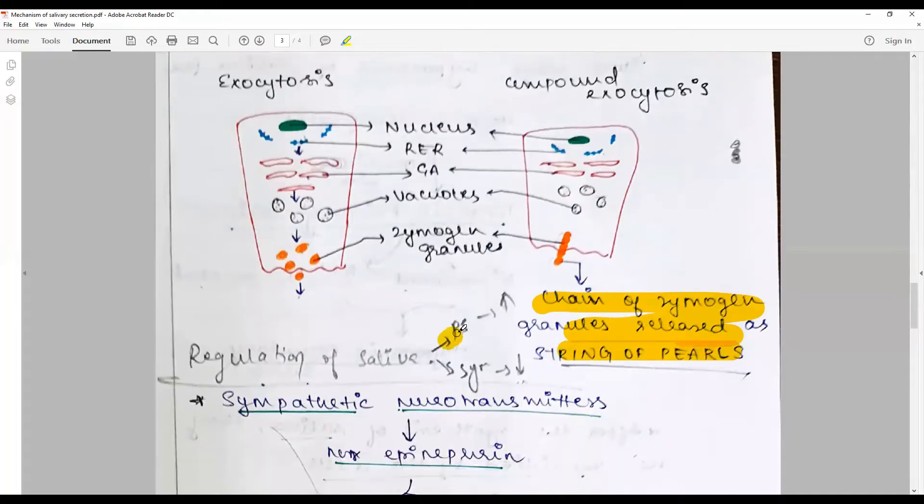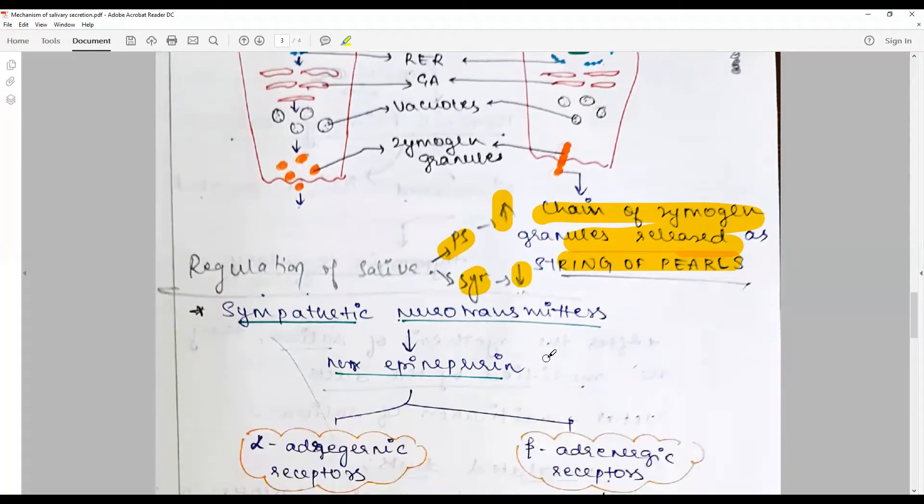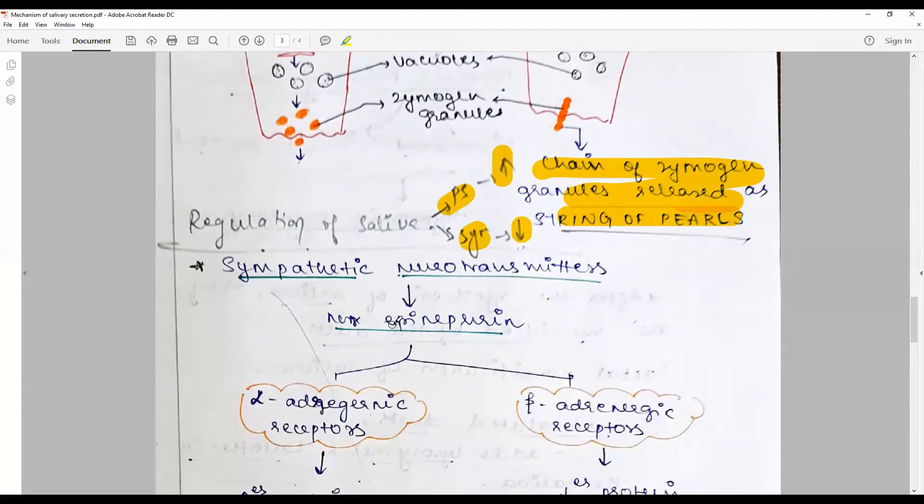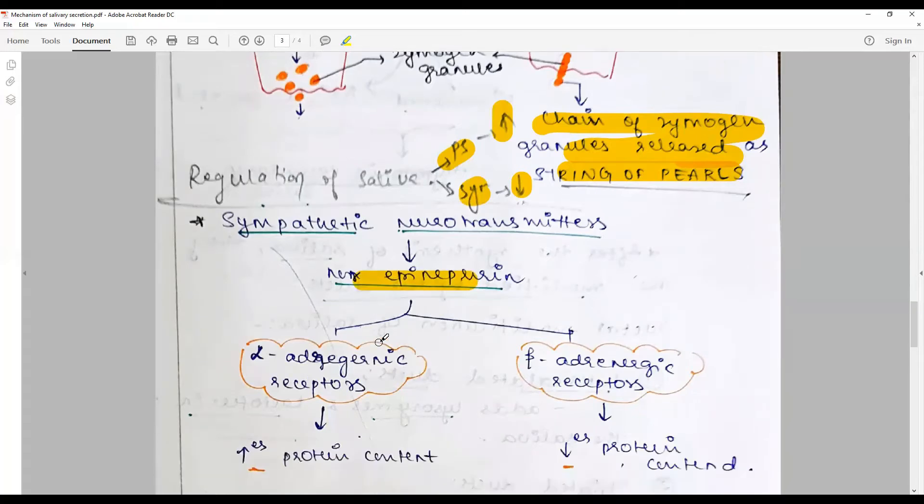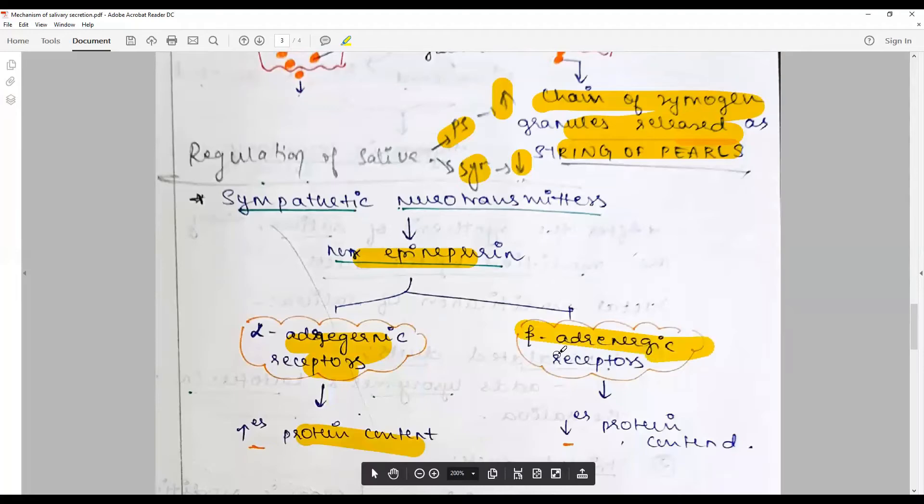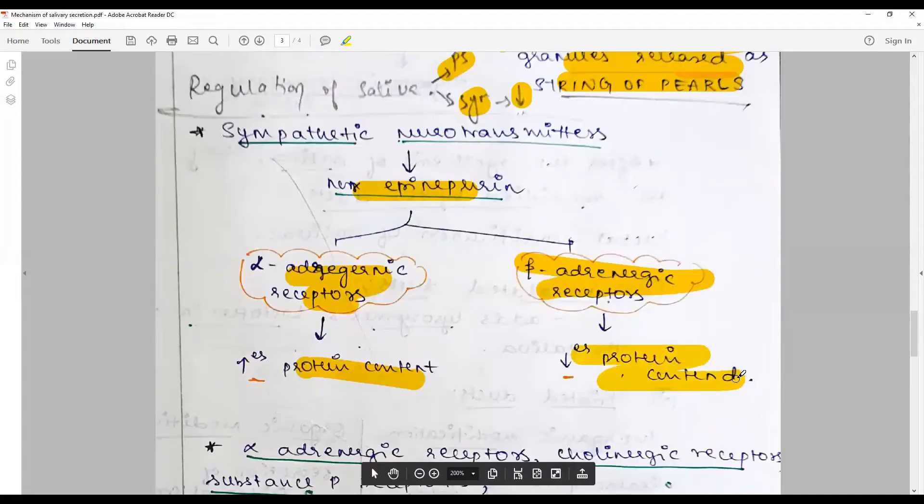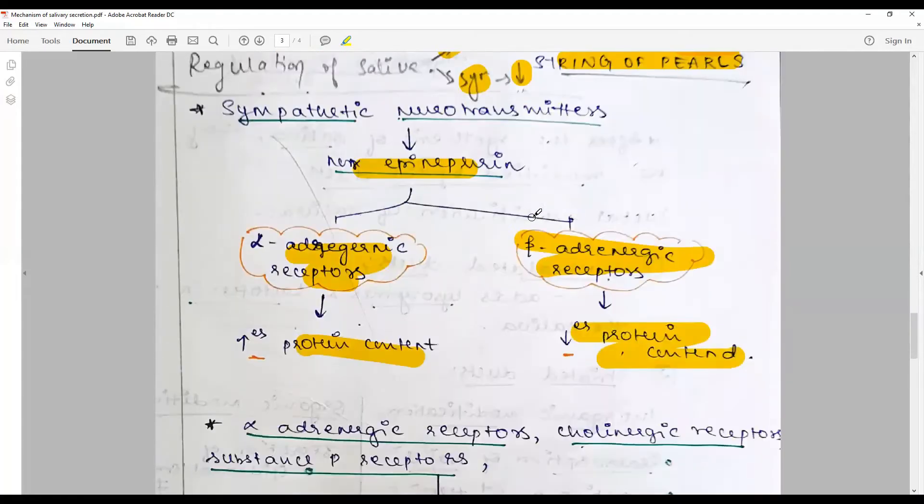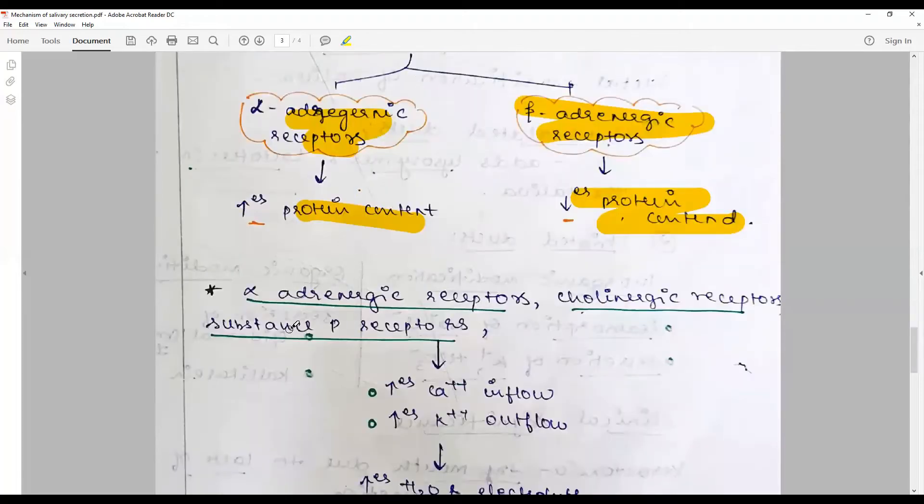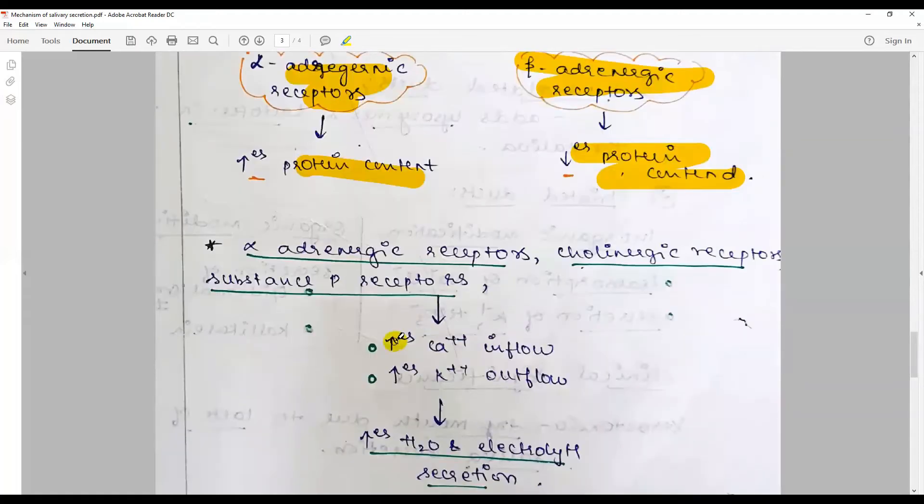The regulation of salivary secretion is by parasympathetic, which increases the serous salivary secretions, whereas sympathetic decreases the salivary secretions. The sympathetic neurotransmitters are norepinephrine, which acts at the alpha-adrenergic receptors to increase the protein content. When stimulated by the beta-adrenergic receptors, there is decreased protein content, similarly for water also. The alpha-adrenergic receptors, cholinergic receptors, and P receptors or substance P receptors cause increase of calcium inflow and increase of potassium outflow, which subsequently leads to increased water and electrolyte secretions.